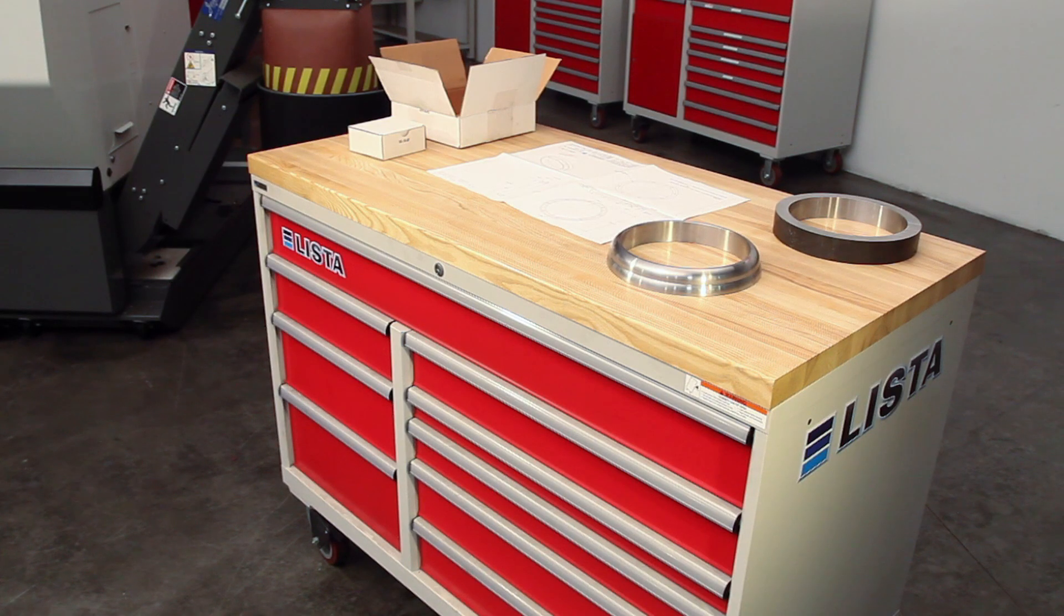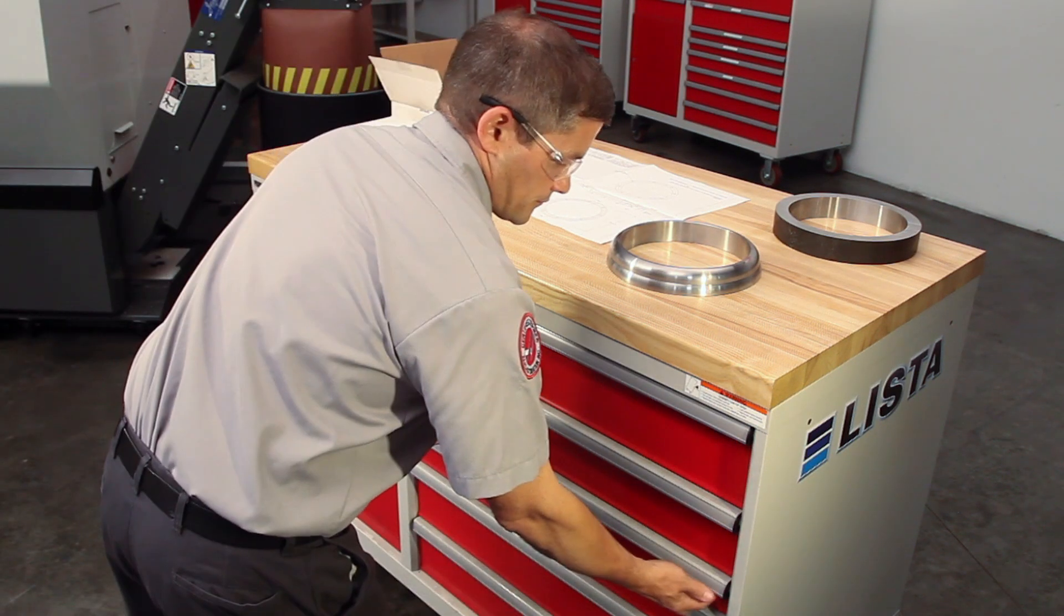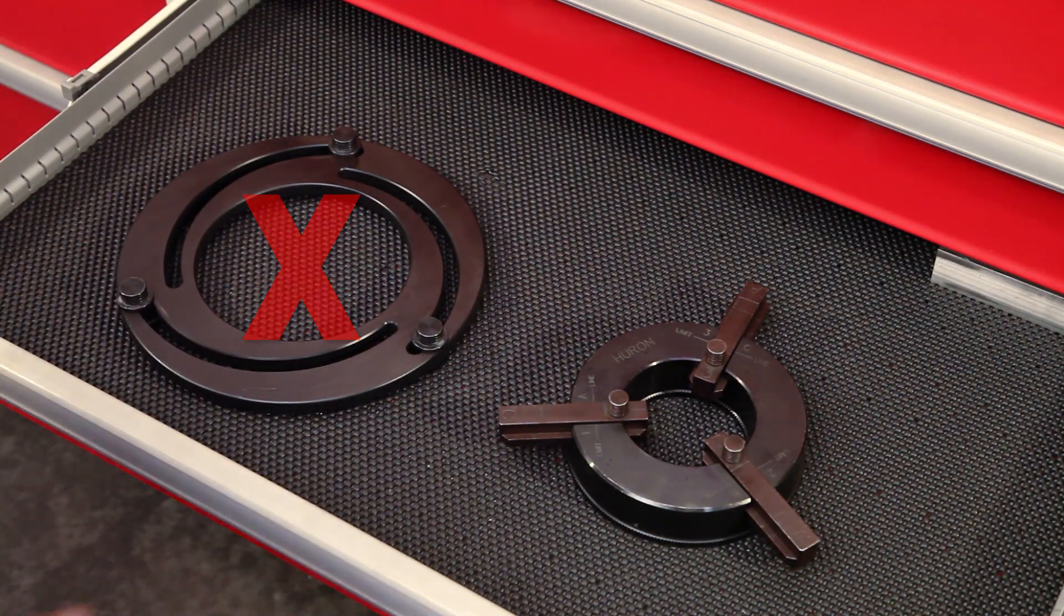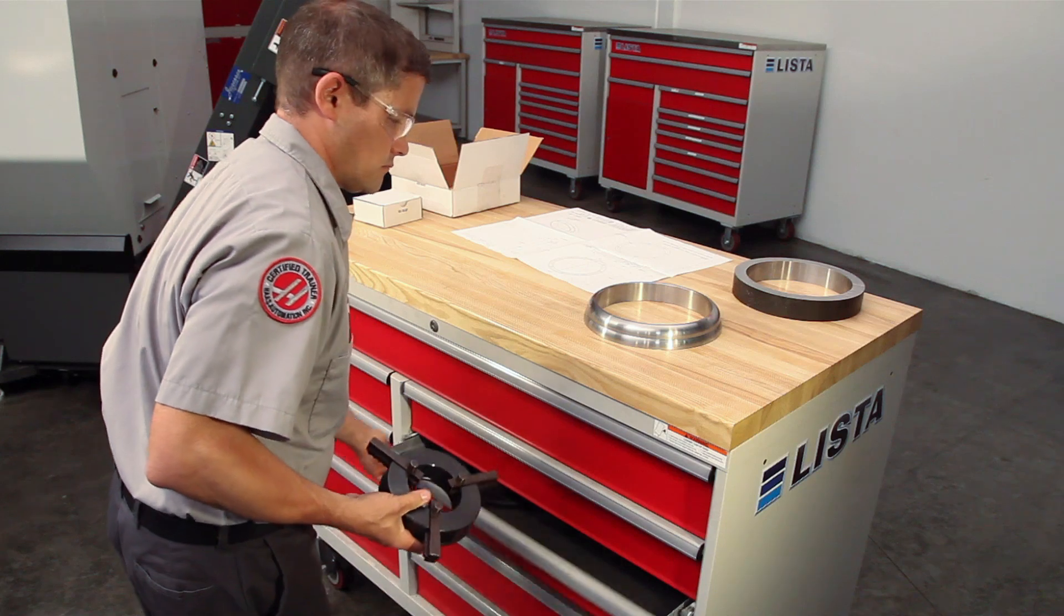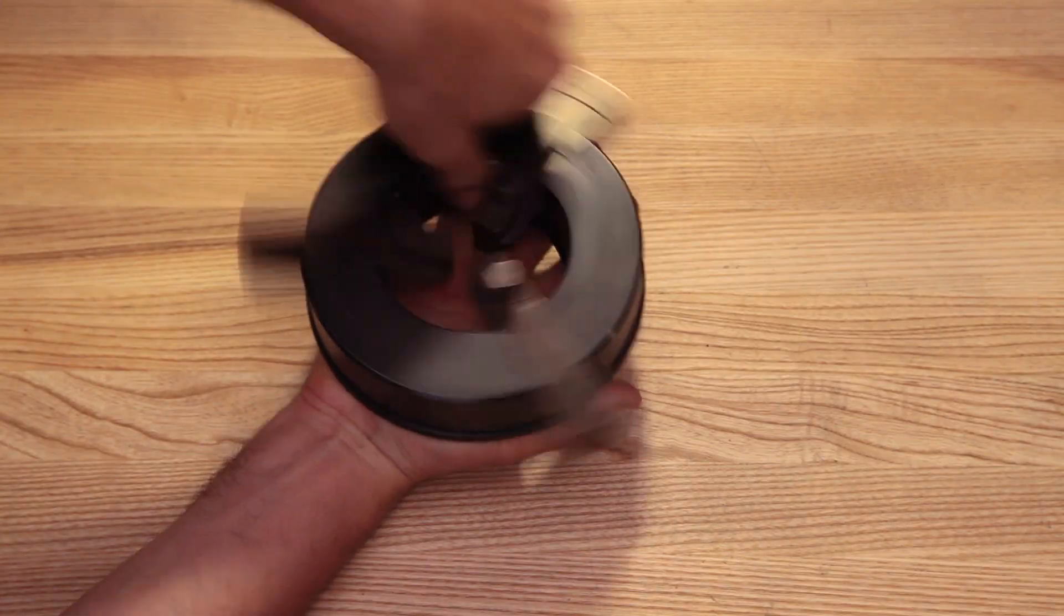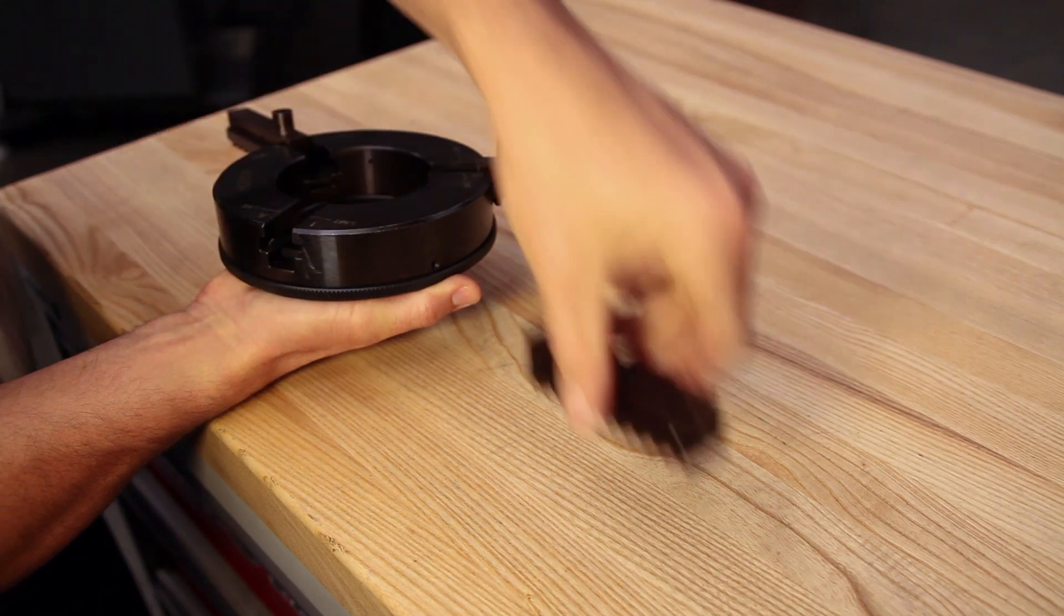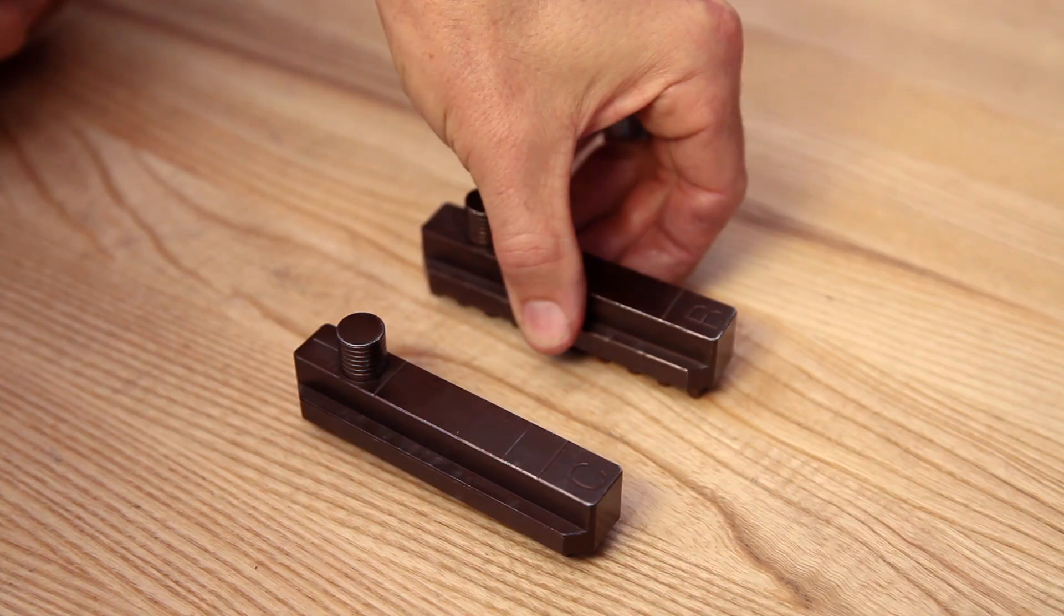Since we'll be using these pie jaws to hold a large ID part, we can't use this style of boring ring since it will block the cutting path. Instead, Andrew will use this style of boring ring. Spinning the boring ring counterclockwise moves the three-threaded grippers outward, so they can be removed.